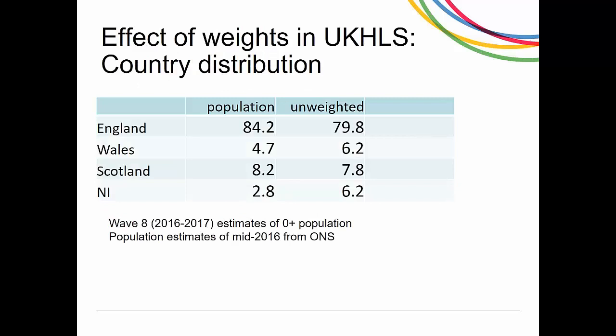What happens if you don't use weights? Let's say you want to look at the proportion of the population — zero plus — and you want to estimate it from wave 8 of our dataset. If you don't use weights, especially in England and Northern Ireland, the proportion is quite off. The weighted results are much closer to the population estimates. Our data is designed to be used with weights.